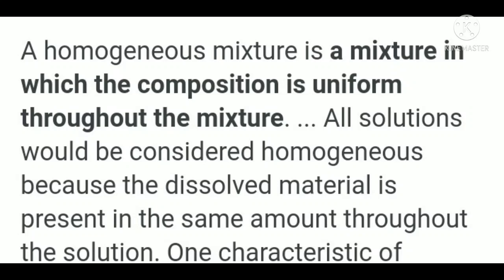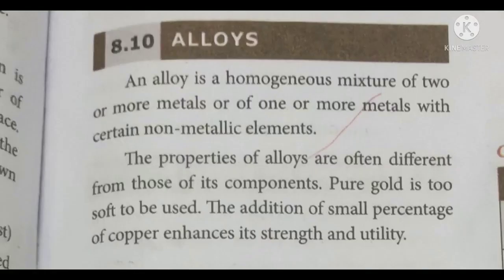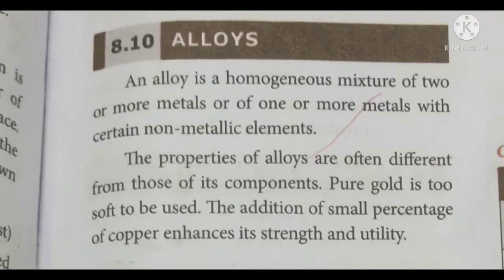When you mix together two different elements they blend with each other and exist as a single phase. Alloys can be formed between metals and metals, or between metals and non-metals, and they are homogeneous mixtures. The properties of alloys are different from those of its components. For example, gold is soft and easily breakable in its purest form, but this property can be enhanced by the addition of copper, which gives strength to the gold.